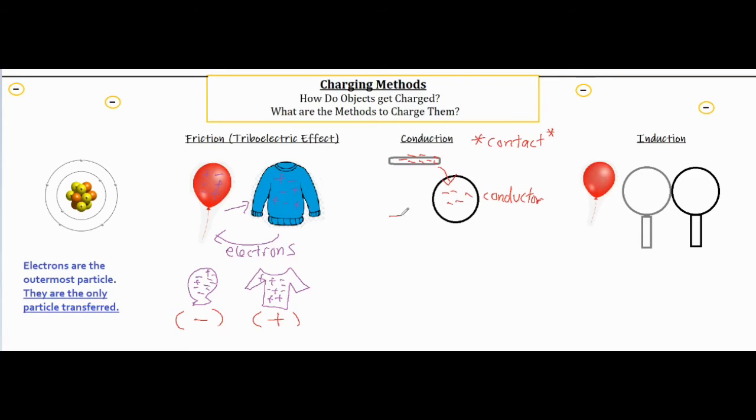But when it touches this conductor and they have a pathway to kind of spread out a little more, it's going to sort of zap some electrons over here.